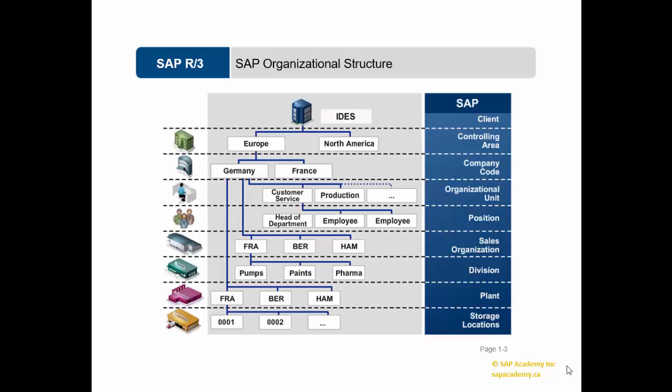Some of the major SAP organizational levels are client, controlling area, company code, sales organization, division, plants, storage locations, purchase organization, and purchasing group. It is very important to understand their hierarchy as well. Client is at the top hierarchy level within an organizational unit, followed by company code, plant, and so on.